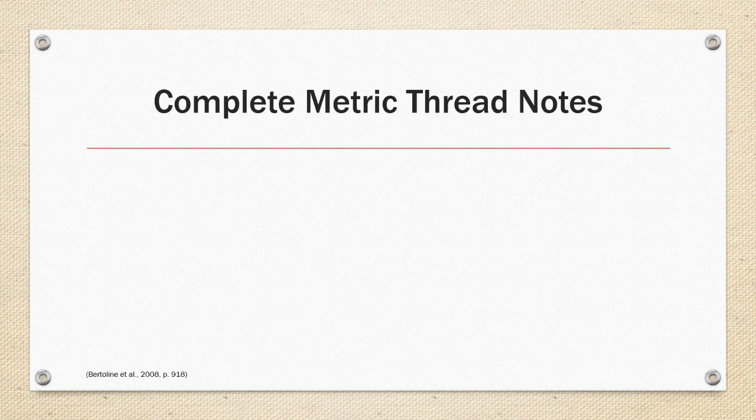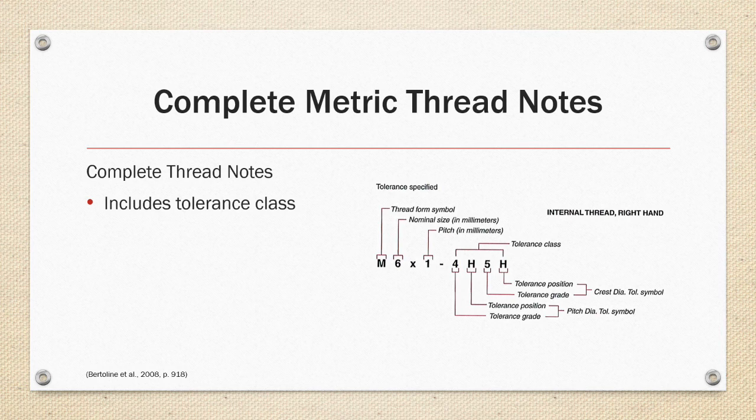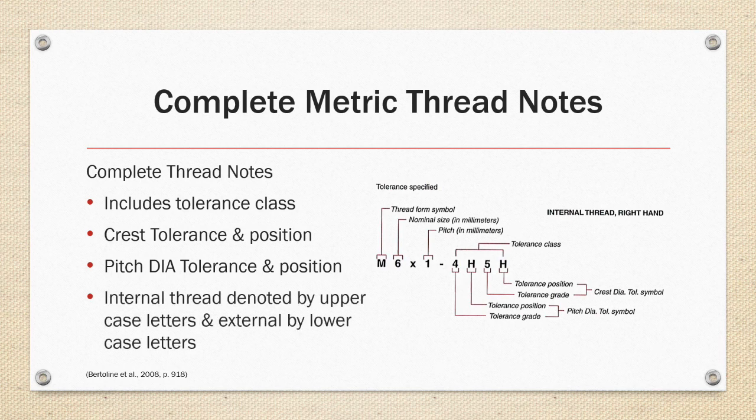The complete metric thread notes add more information on the tolerance class. This tolerance class includes crest tolerance and position, pitch diameter tolerance and position, and internal threads are denoted by an uppercase letter and external by a lowercase number. So in the example on the right their uppercase H's denote an internal thread. In the example on the right we have a metric 6 millimeter nominal diameter bolt with a pitch of one thread per millimeter and the tolerance class is 4H5H which controls the tolerance of the thread of an internal thread.